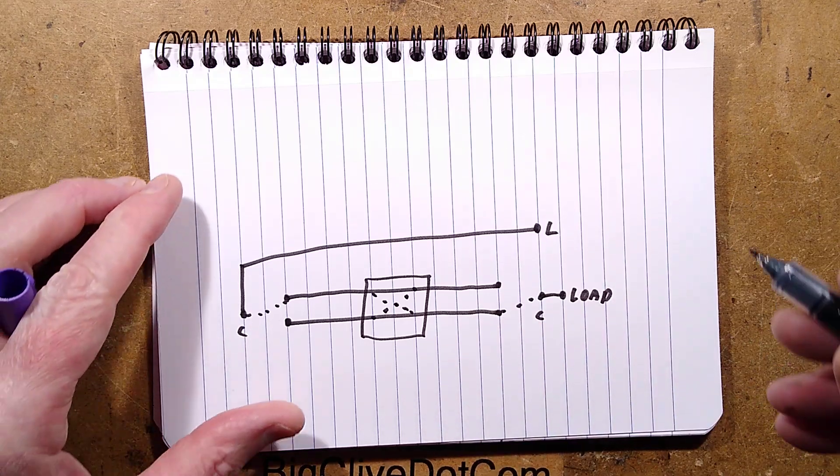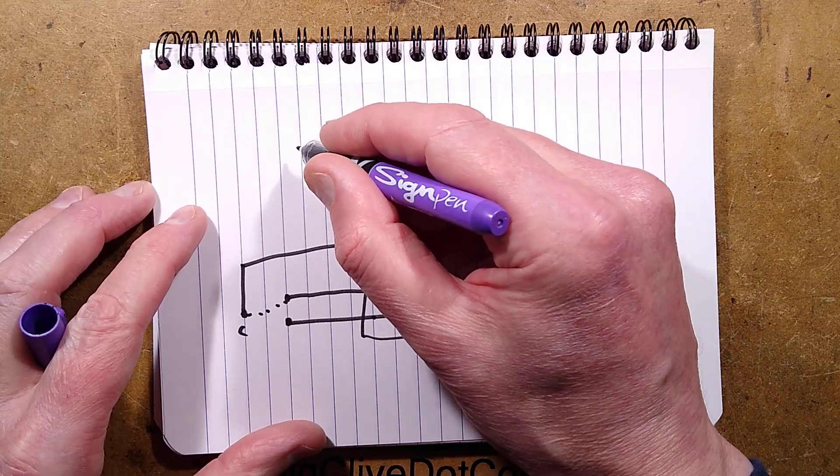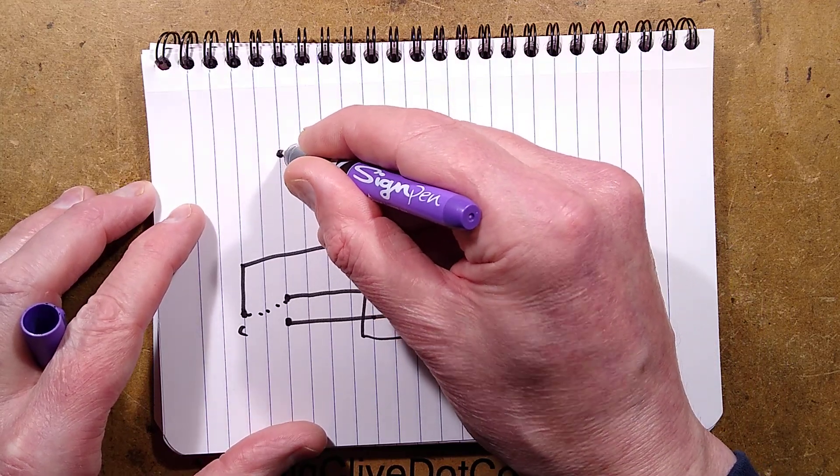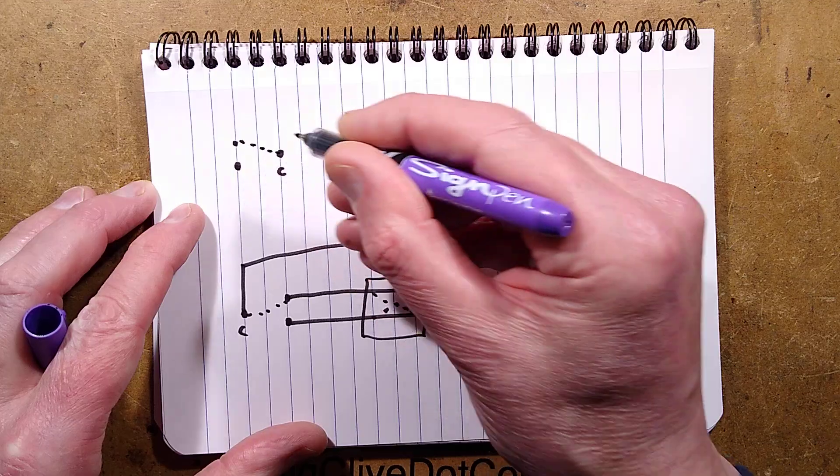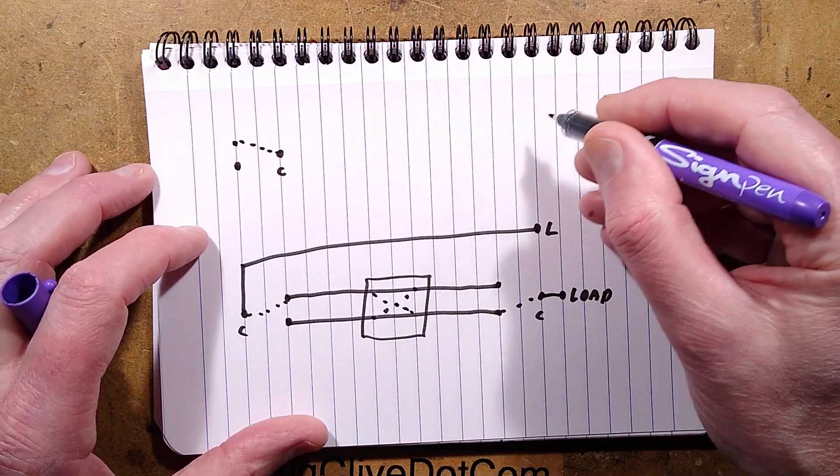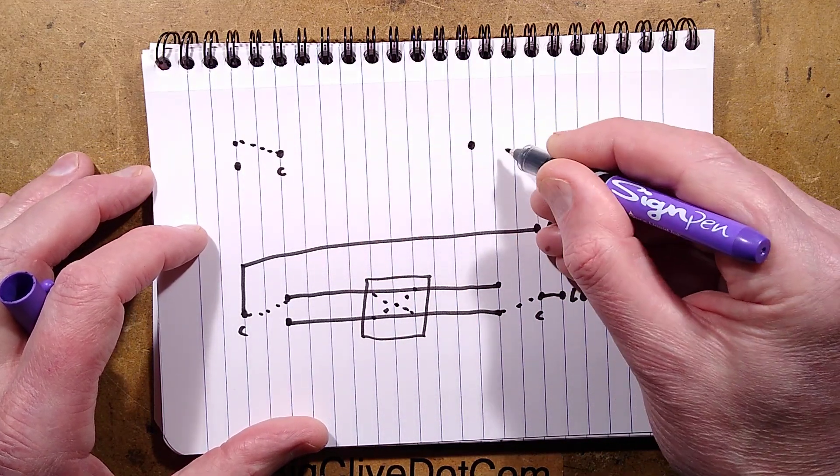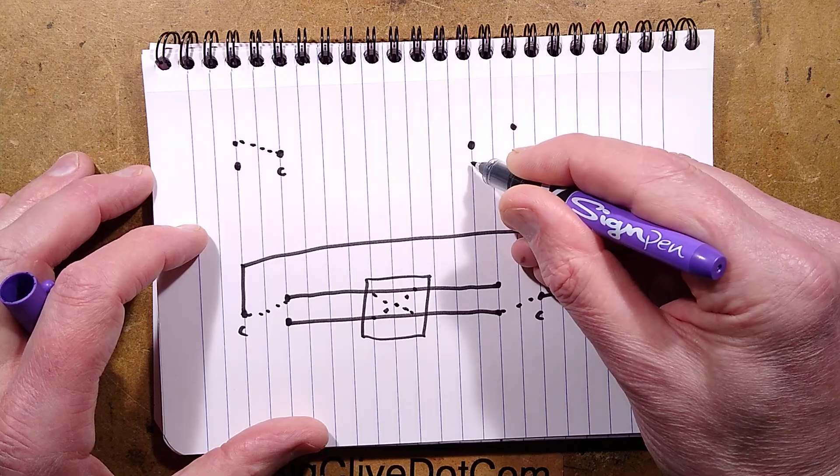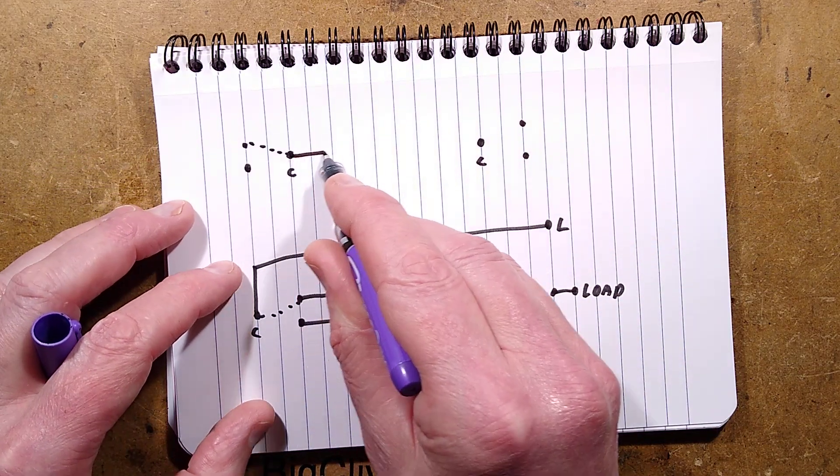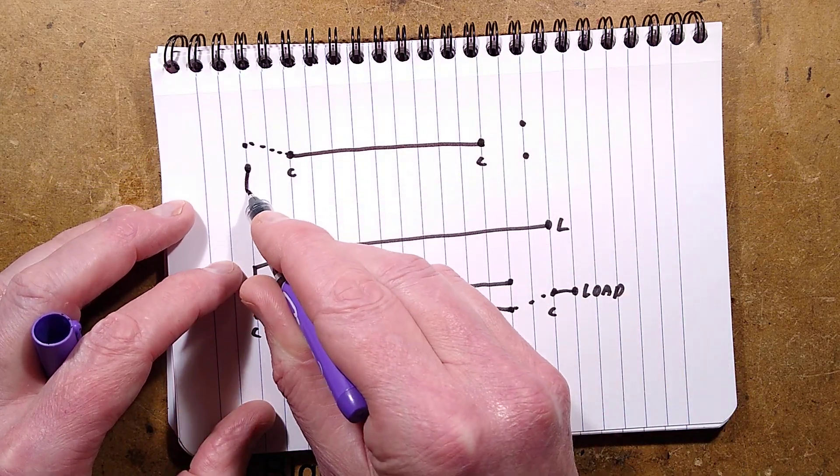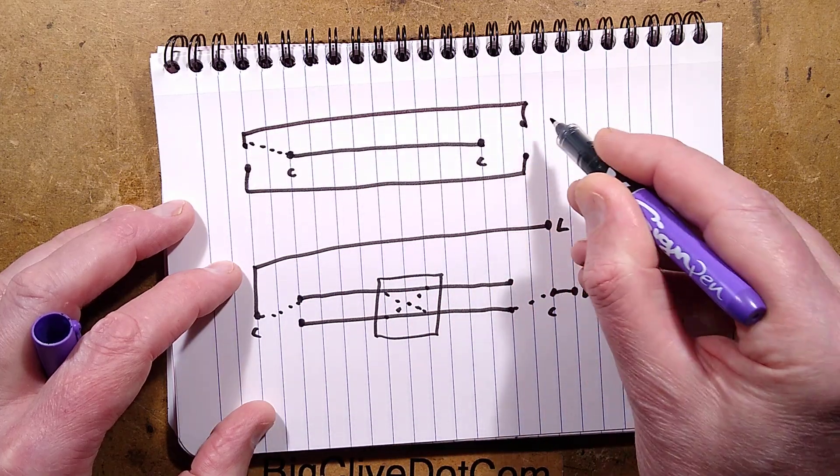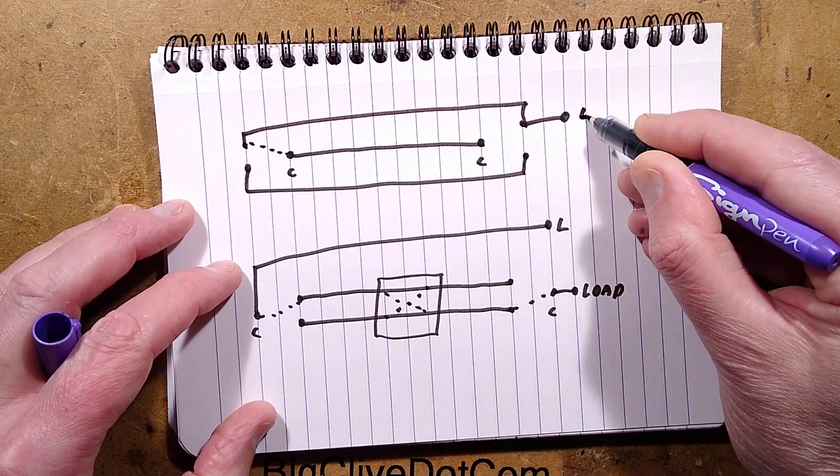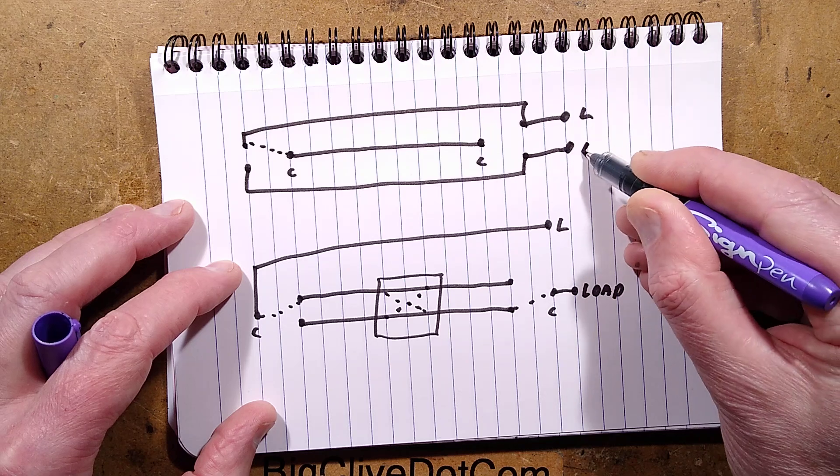Now the other way you can wire them, and it's my preferred way to be honest, is to have your common, the two connections - I'll just show one of them made - and here's the one at the other end and the two connections. There's a common again, and I bridge the common and I bridge the other connections like this, and then you've got live and load.